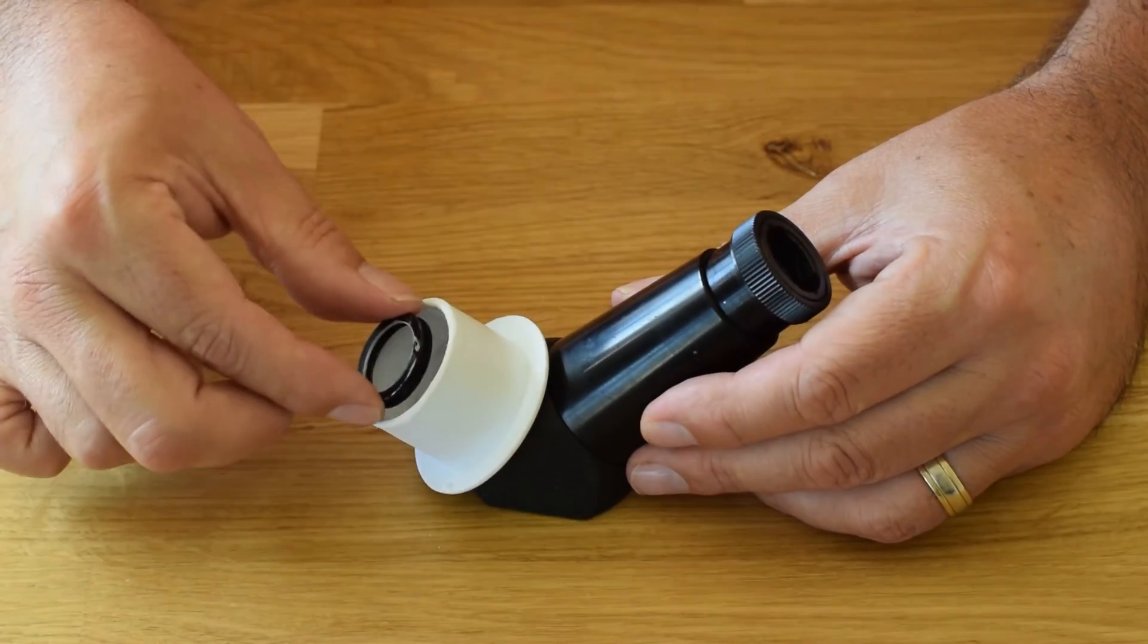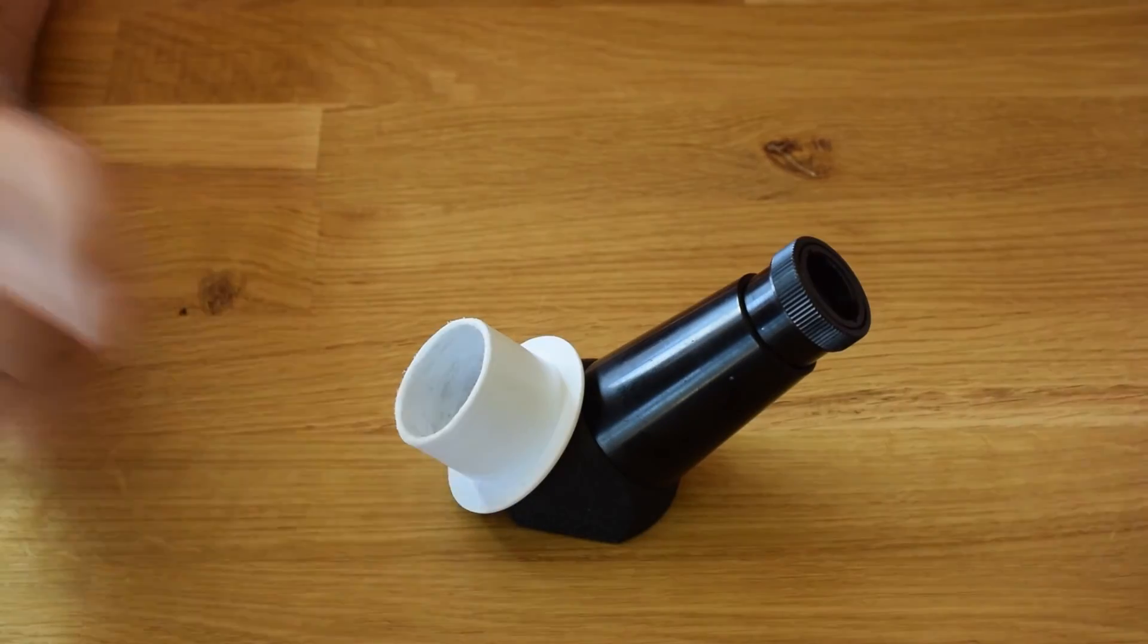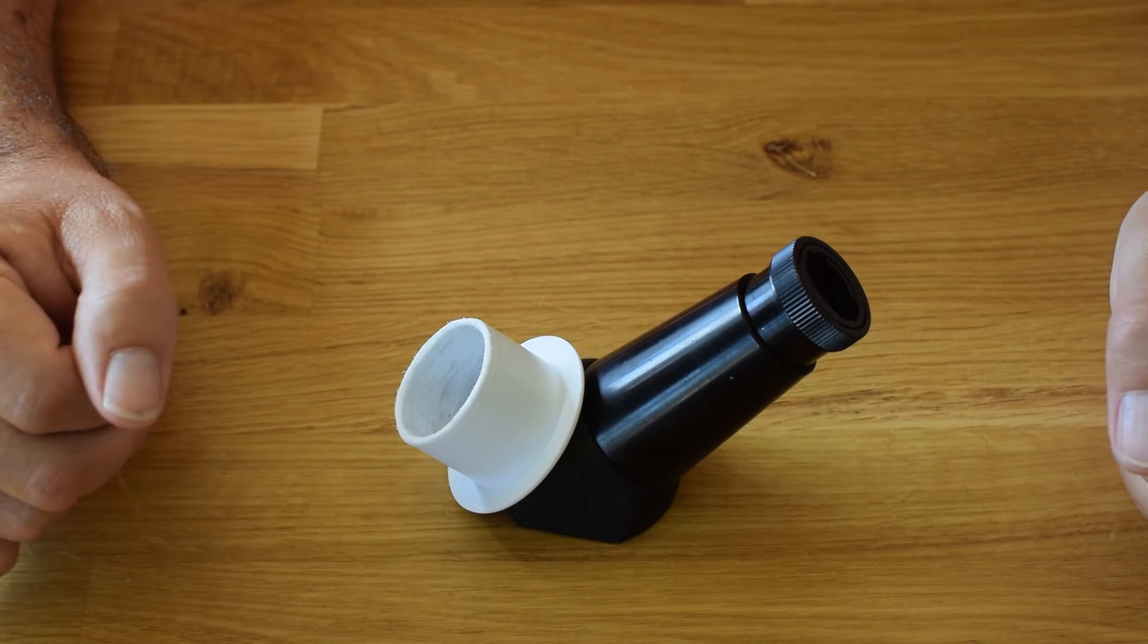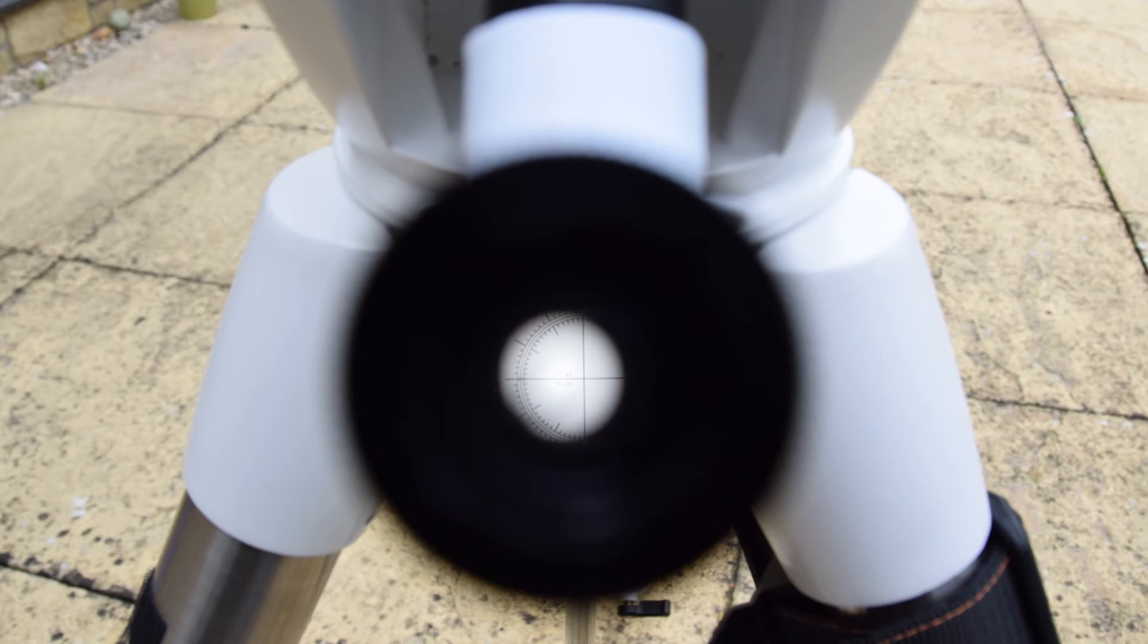This is the result, this is what it looks like fitted to the scope. Now instead of having to bend down, I just have to bend down but only at 45 degrees, not right down underneath it.